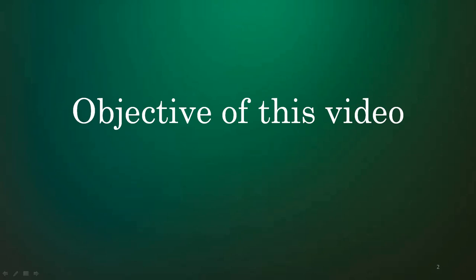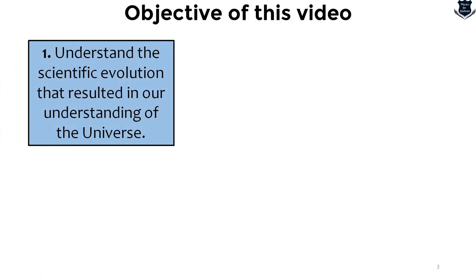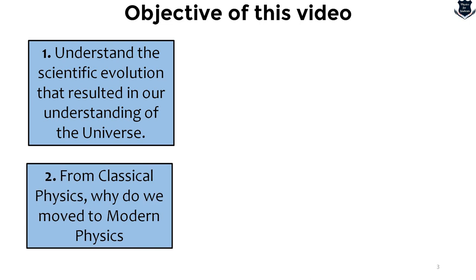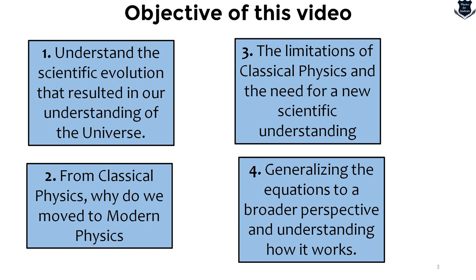Before we go ahead, I want to make the objective of this video very clear. First, we are going to understand the scientific revolution that resulted in our current understanding of the universe. Second, we will understand why we moved from classical to modern physics — the limitations that gave rise to that. Third, we look at the limitations of classical physics and the need for a new scientific era. And most importantly, we will see why the generalization of equations happened and how it brought a broader perspective.